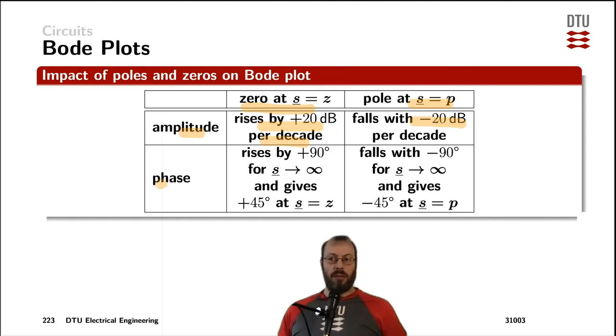Now a zero is also impacting the phase, which gives a rise of the phase for s going towards infinity of plus 90 degrees per zero. So if you have two zeros,